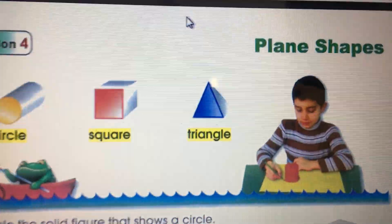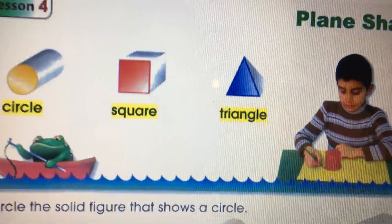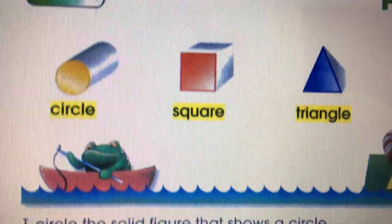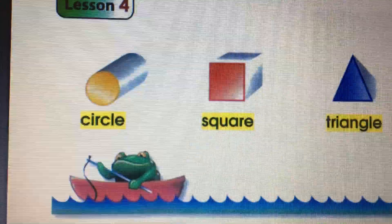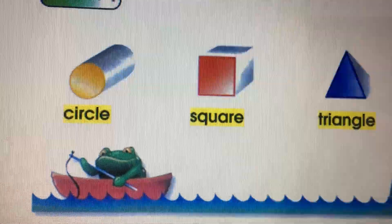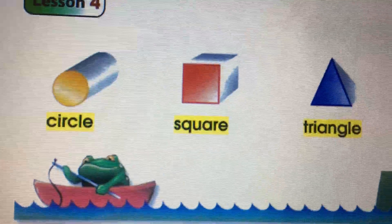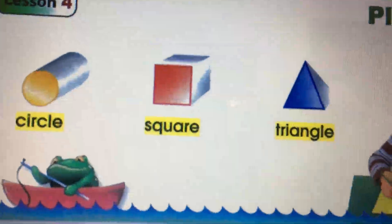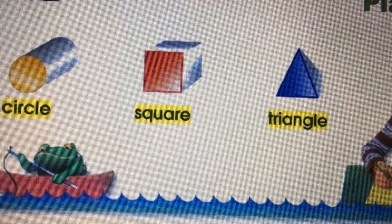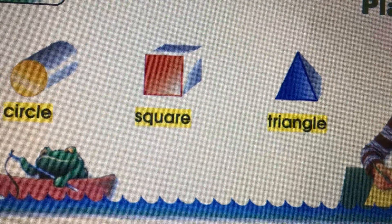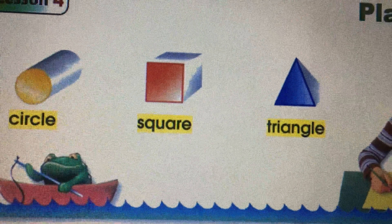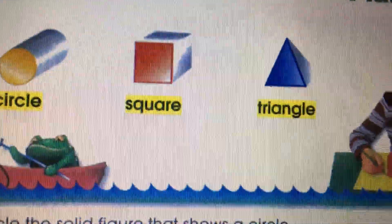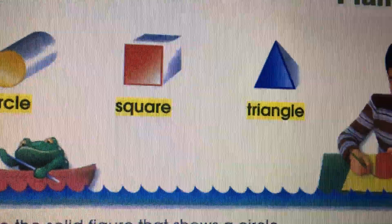That is the lesson of today: flat shapes of solid figures. The flat shape of the cylinder is a circle, the cube is a square, and the pyramid is a triangle. I hope you understand, thank you!